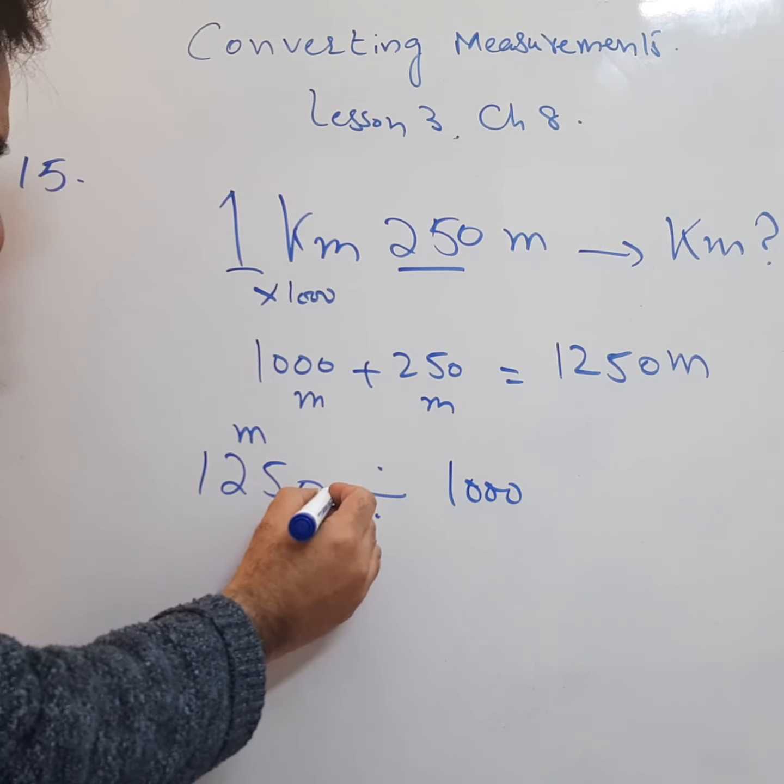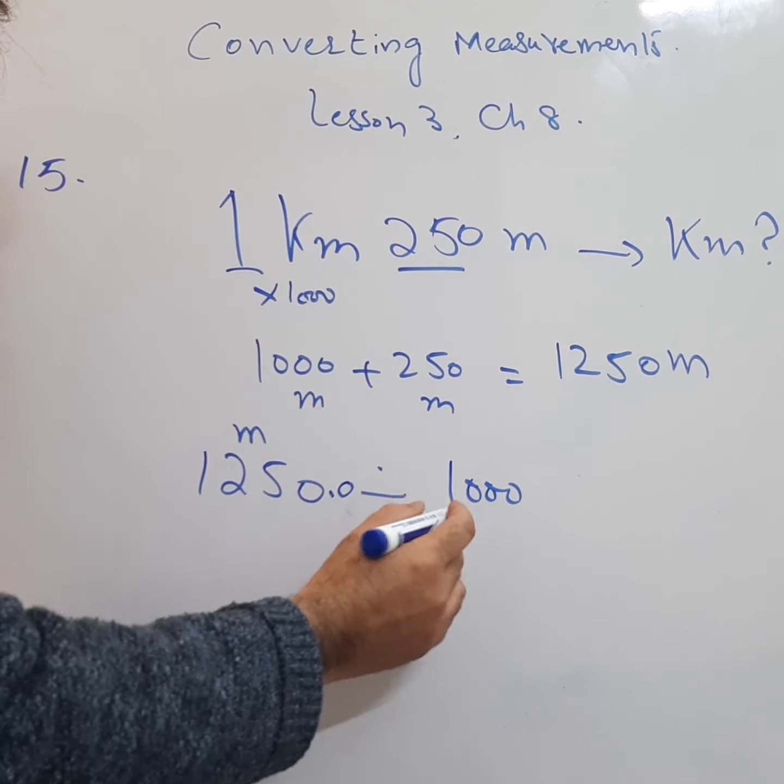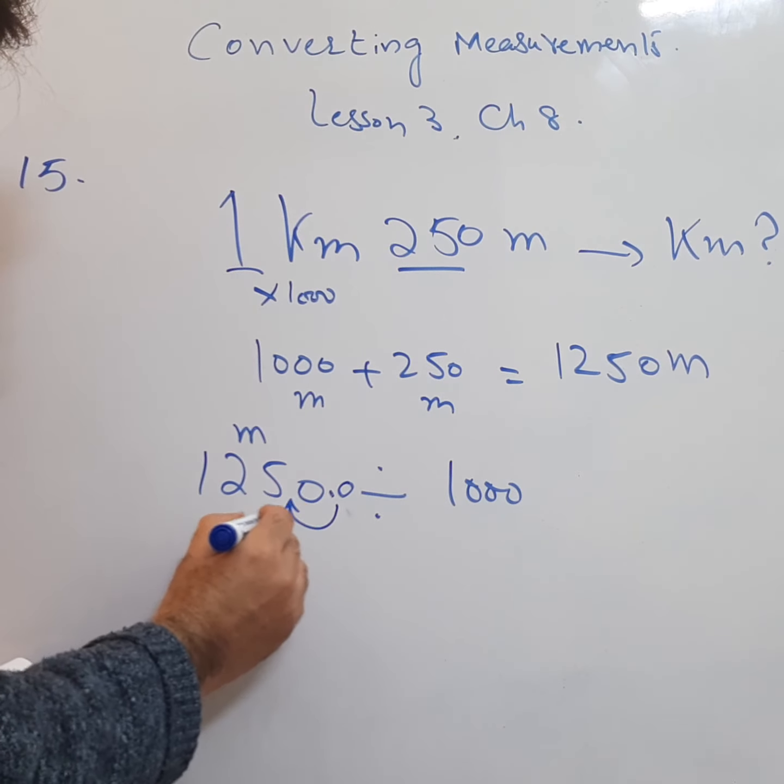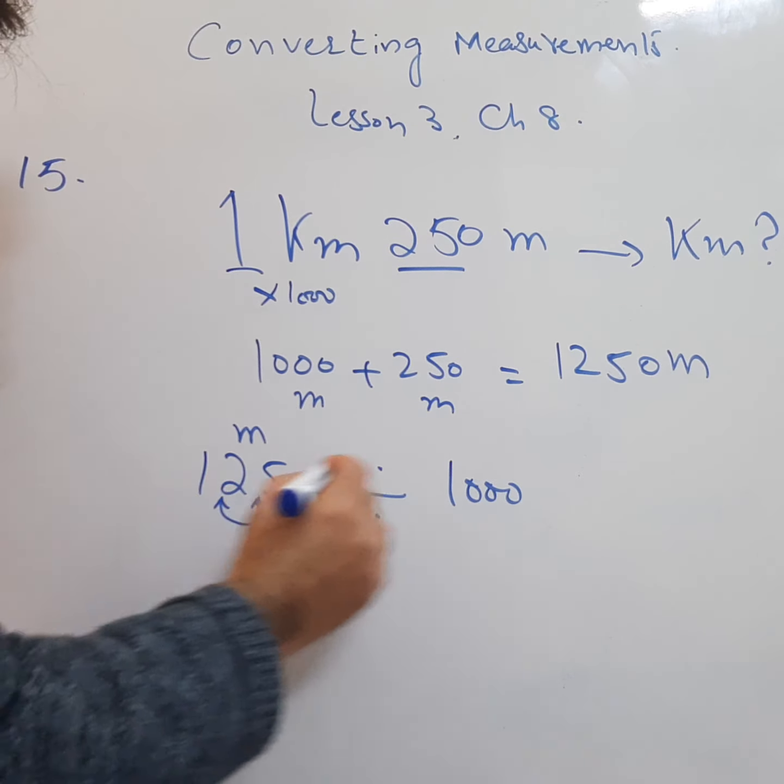So we can say 1250.0. We need to shift this decimal point to the left side 3 times. 1, 2, 3 becomes 1.25.